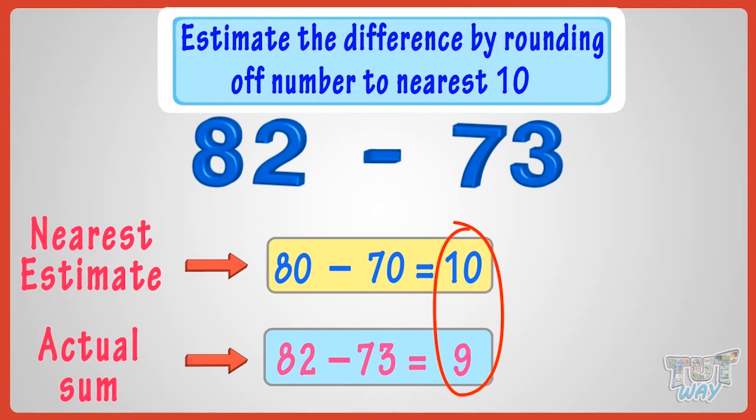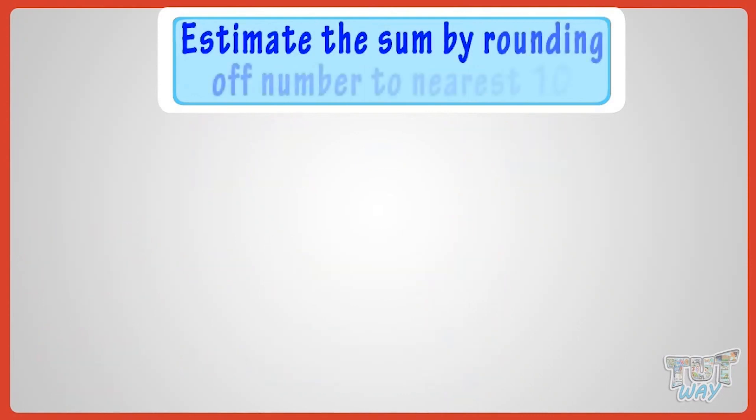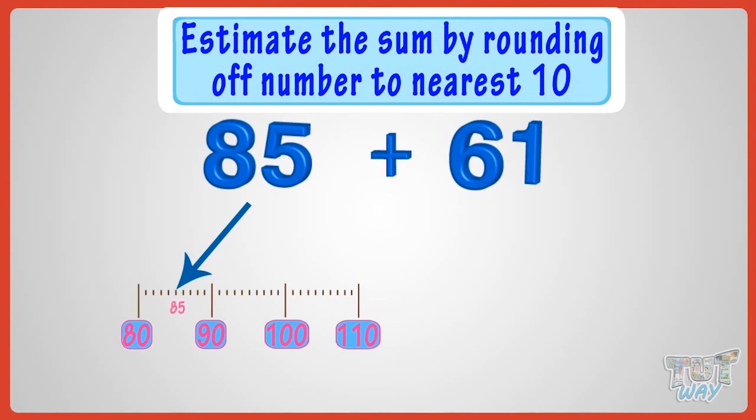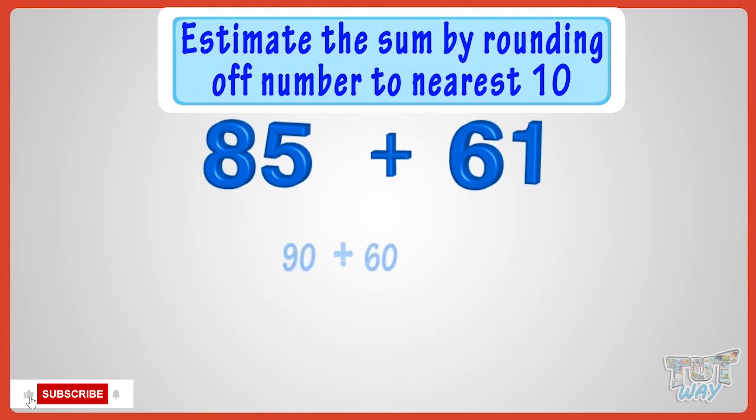Now, let's take another example. We have to add 85 and 61. Here, both the numbers are midway between two tens. So, we will be rounding off them. Rounding off 85 to the nearest ten, we get 90 as 85 is on the 5 mark. Rounding off 61 to the nearest ten will give us 60 as 61 is below the 5 mark. Now, add the rounded off figures. 90 plus 60 equals 150.